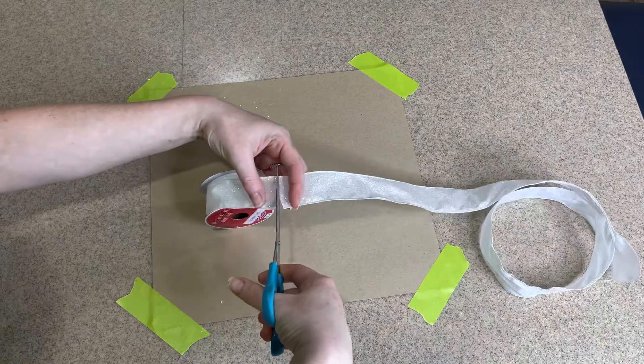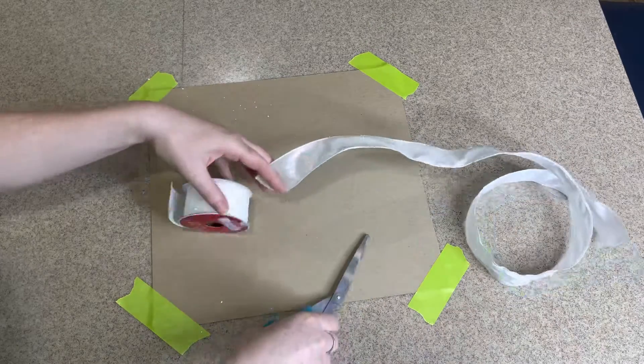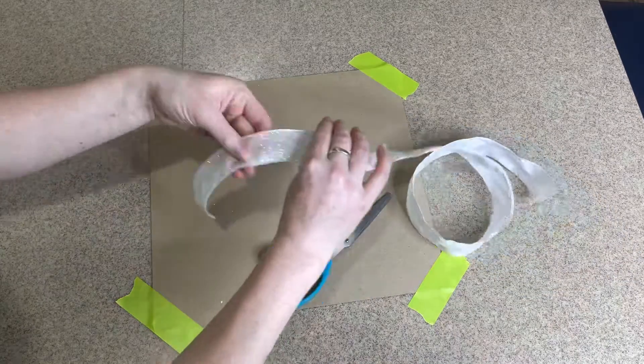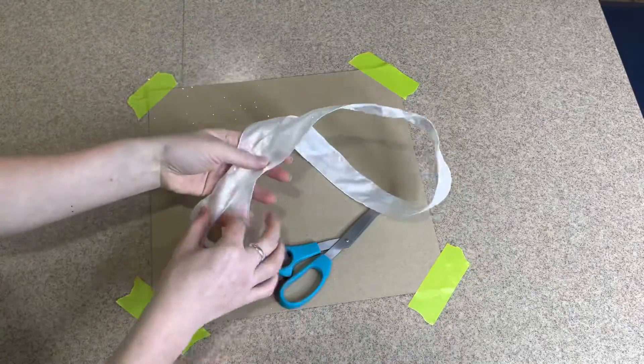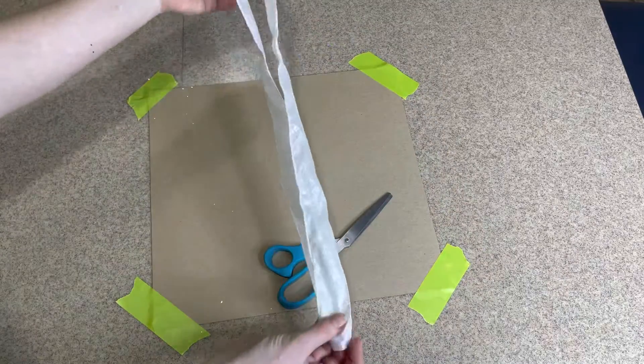You're going to take your ribbon and you're going to fold it in half, essentially creating a center point at the top.